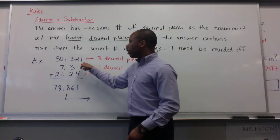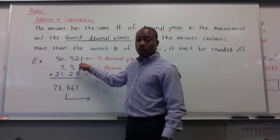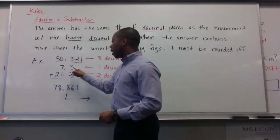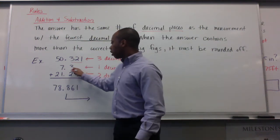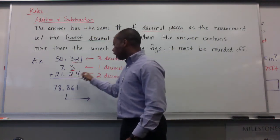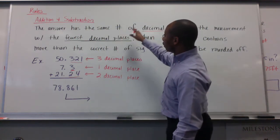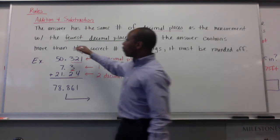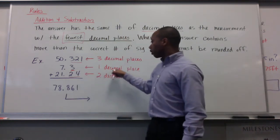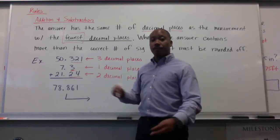50.321 has three decimal places after the decimal. 7.3 has one decimal place after the decimal. The rule says the answer has the same number of decimal places as the measurement with the fewest decimal places. 7.3 has the fewest decimal places, so this is going to determine my number of significant figures in my final answer.